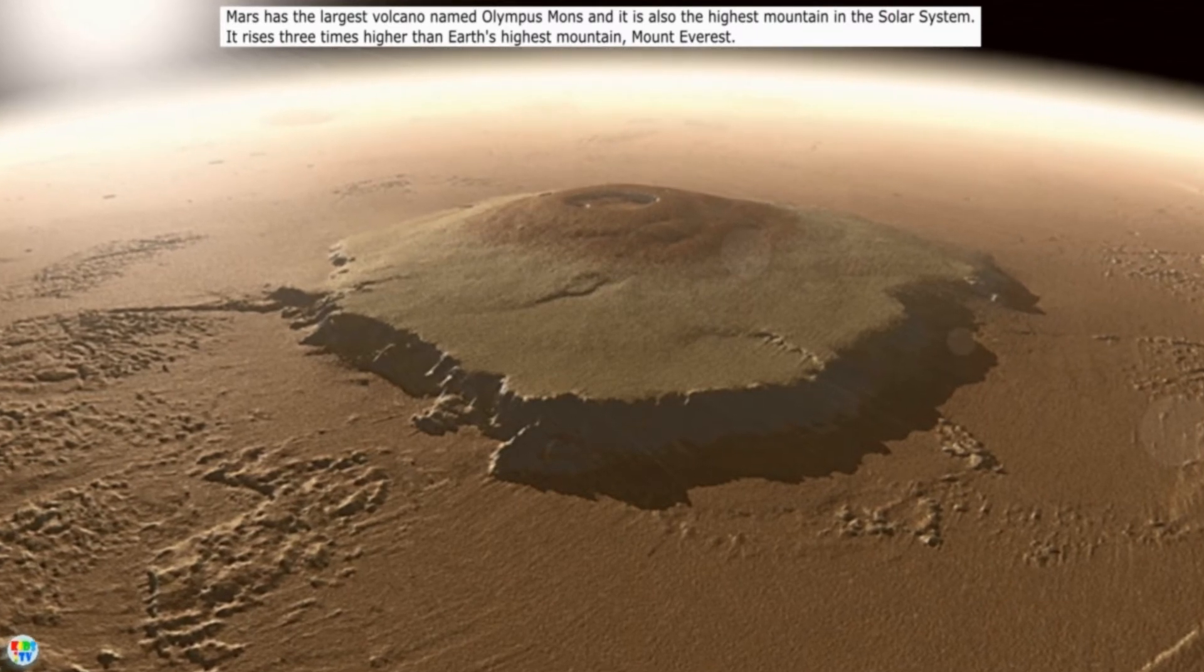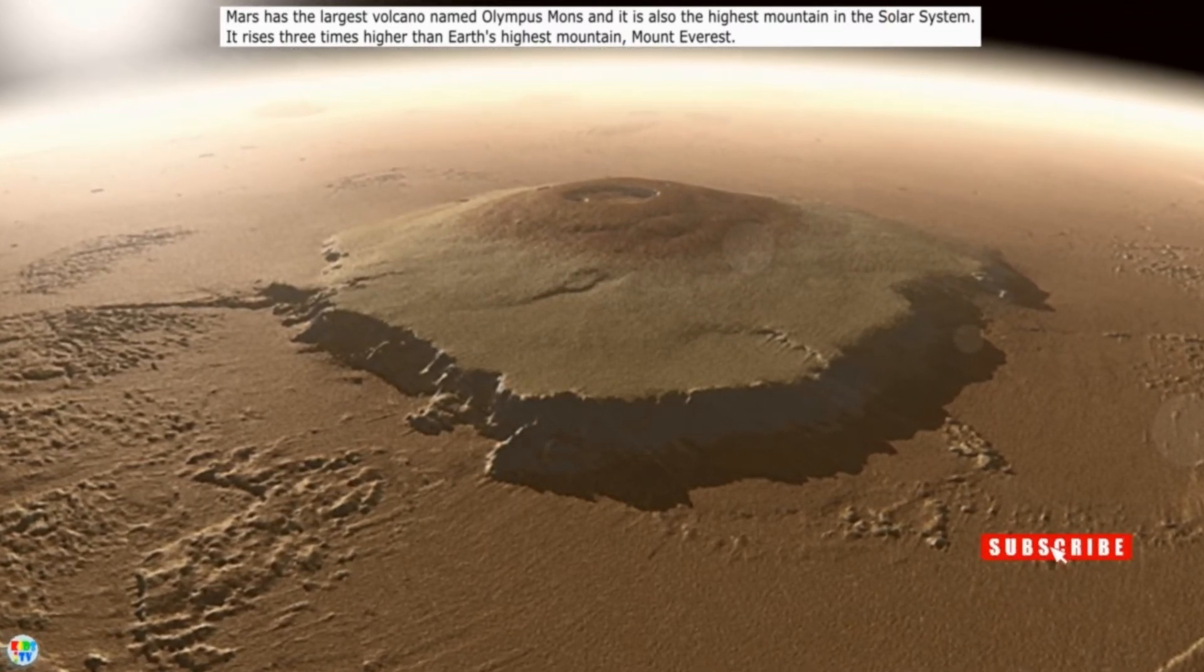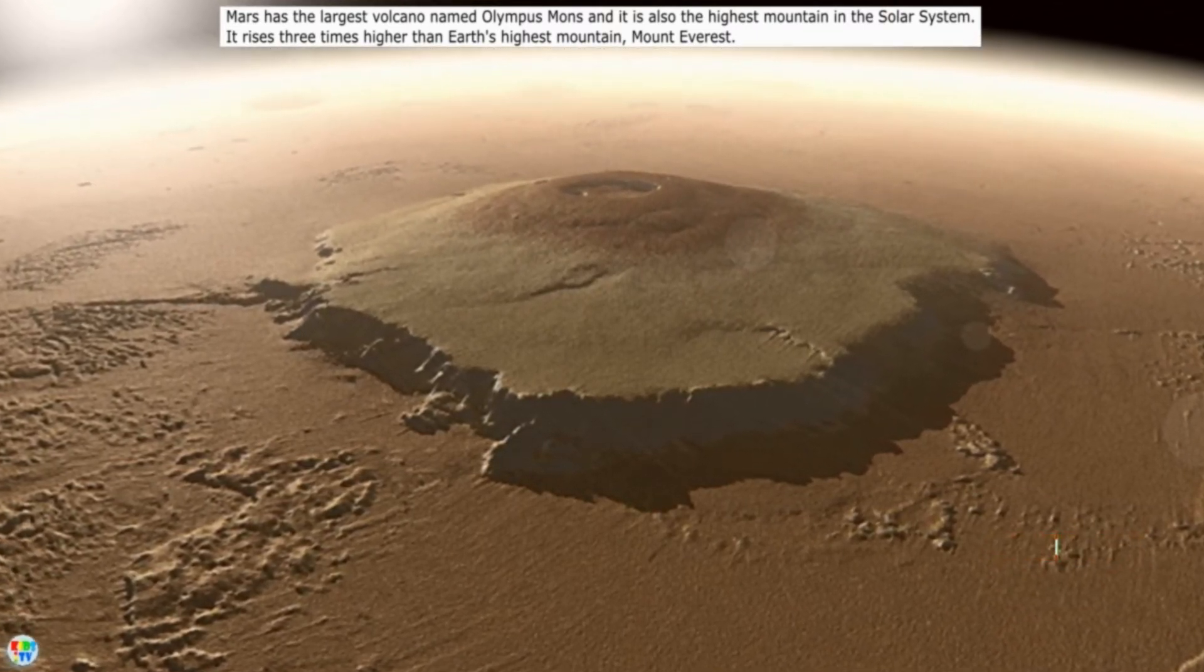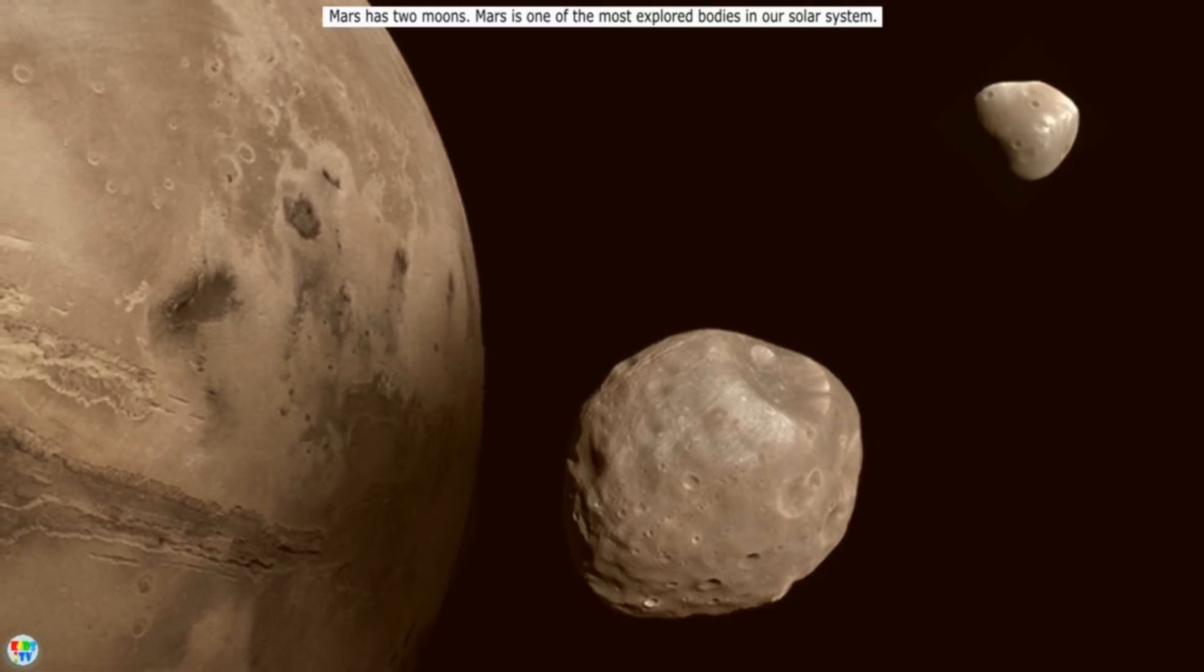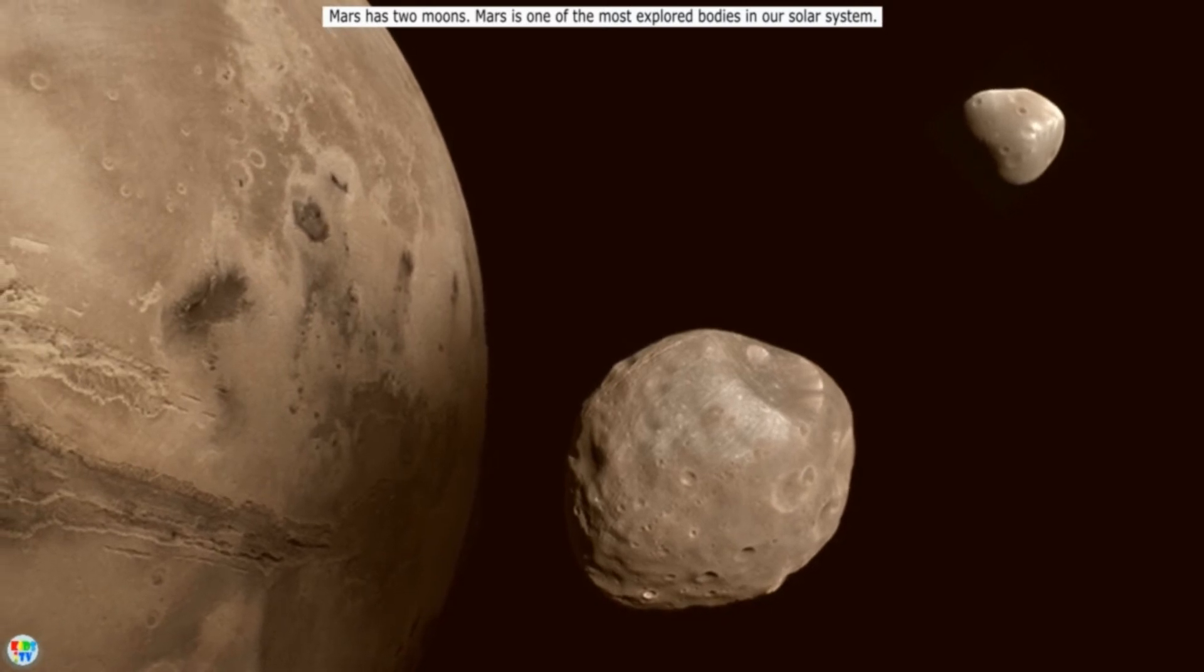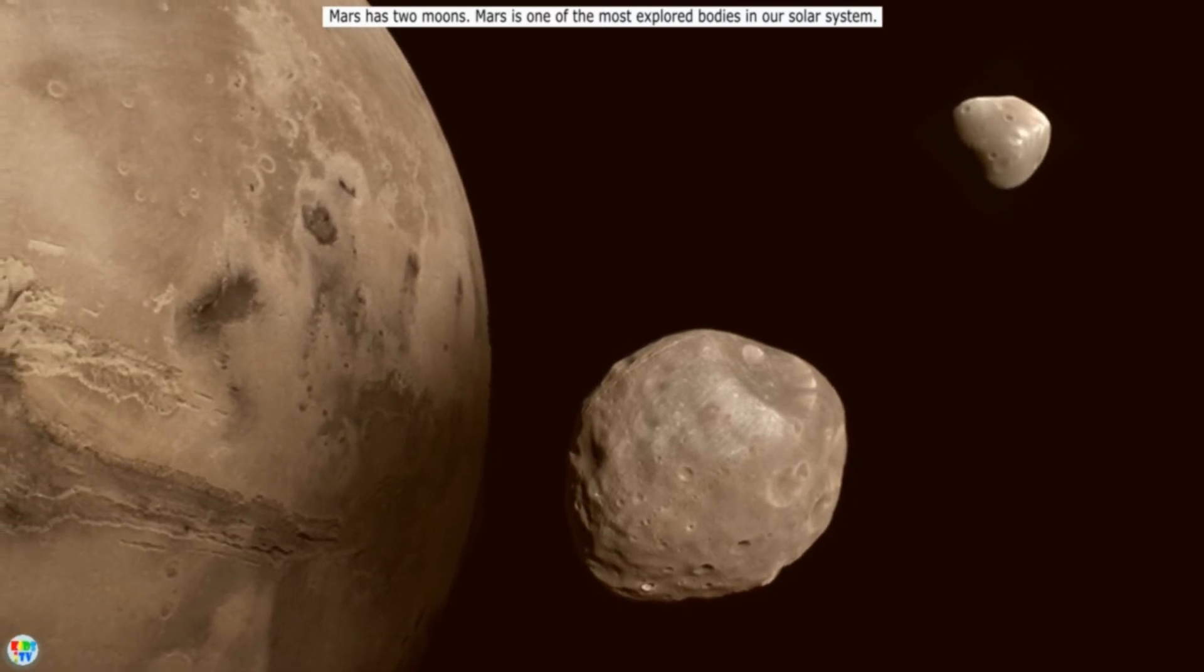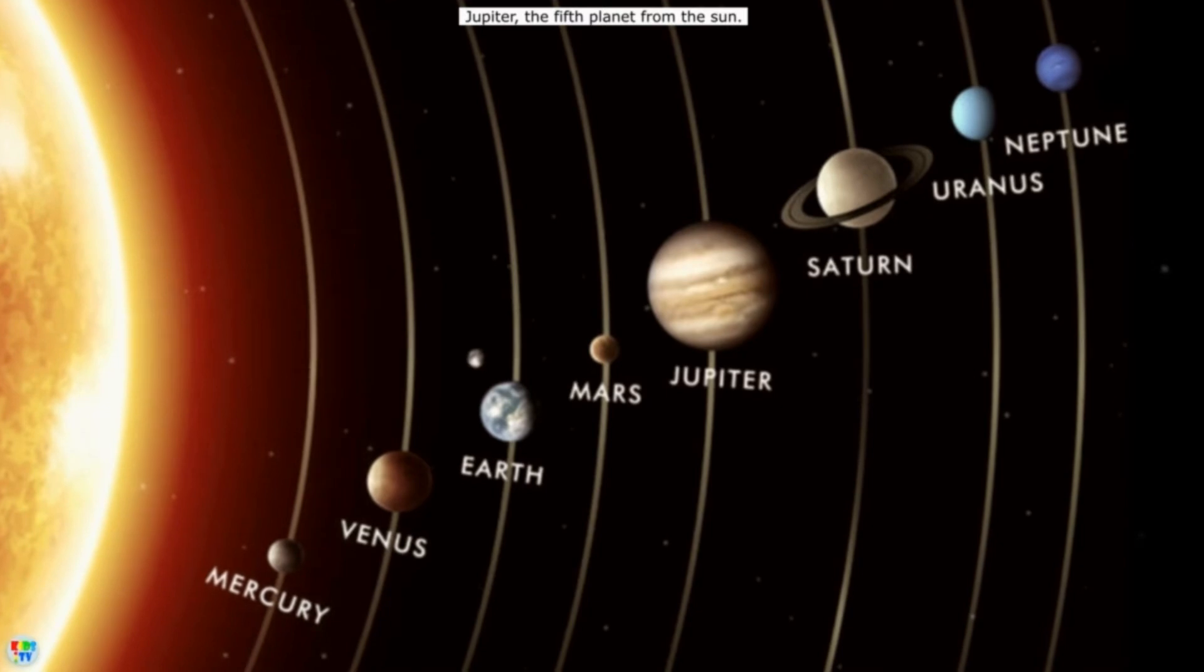Mars has the largest volcano named Olympus Mons, and it is also the highest mountain in the solar system. It rises three times higher than Earth's highest mountain, Mount Everest. Mars has two moons. Mars is one of the most explored bodies in our solar system.